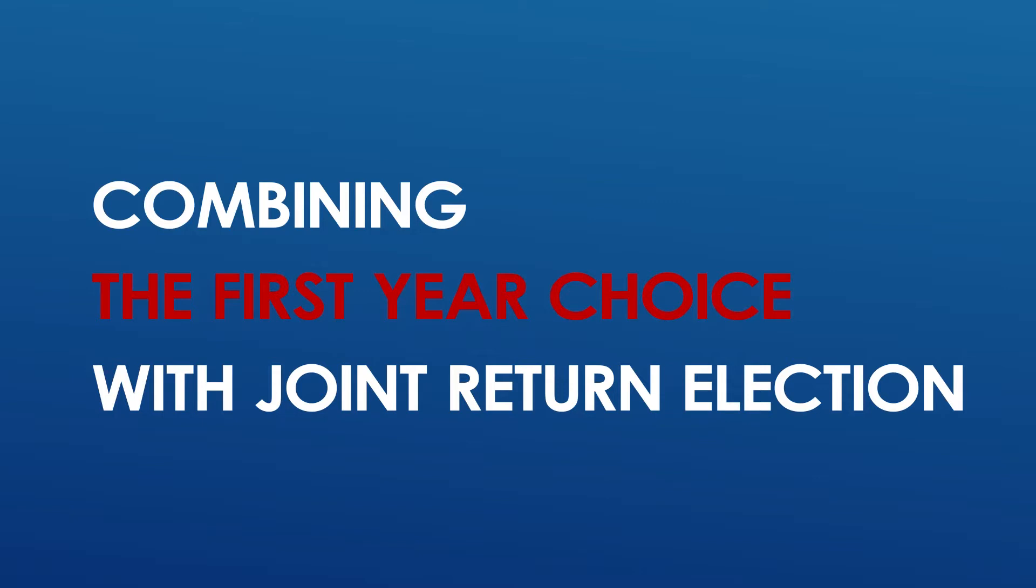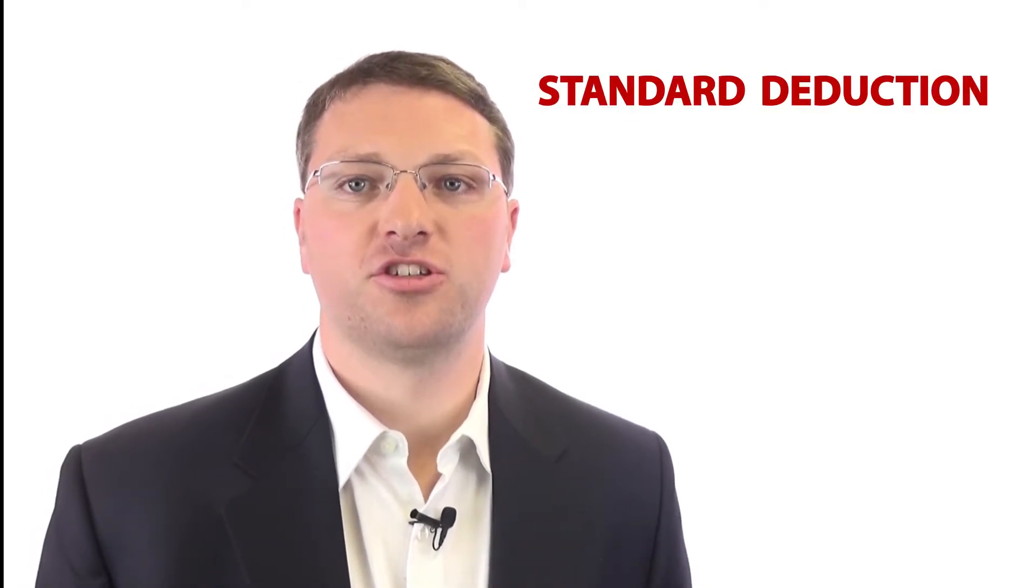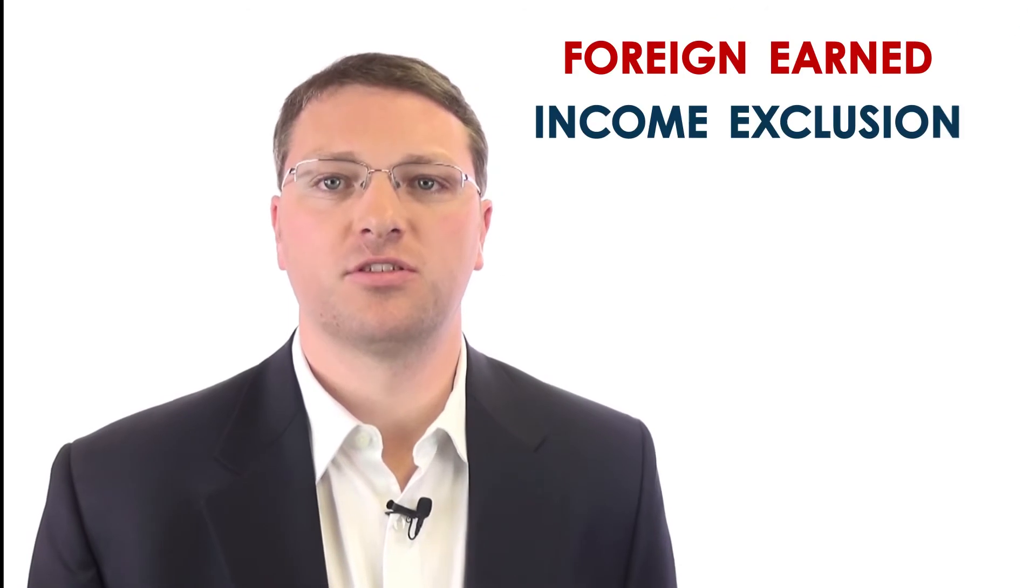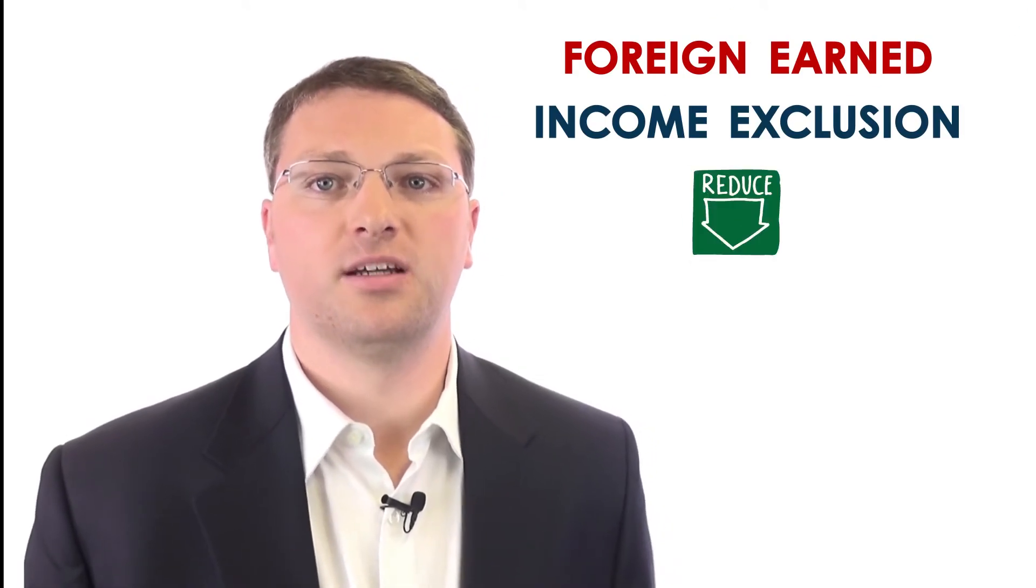Let's discuss combining the first-year choice with a joint return election. A further election is available when combined with the first-year choice election to file a joint resident return with your spouse and be treated as a U.S. resident for the entire year. Under this election, you can claim the standard deduction and other tax benefits available to U.S. citizens and residents, but you are subject to tax on your worldwide income for the entire calendar year, so be careful and make the right choice. In order to eliminate double taxation, the foreign tax credit and possibly the foreign earned income exclusion are available to reduce or eliminate double taxation.